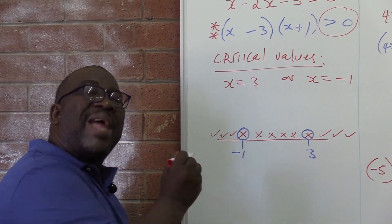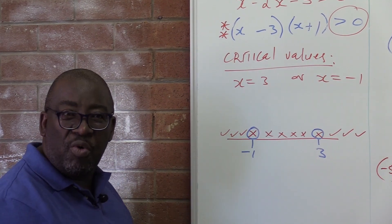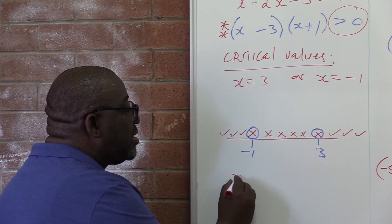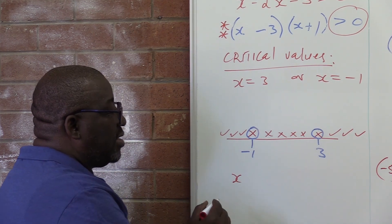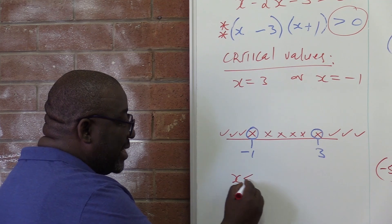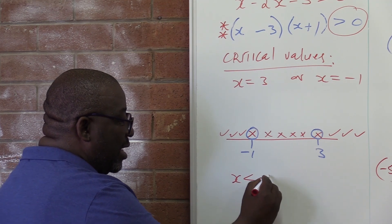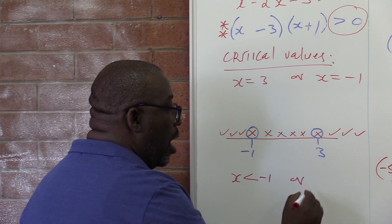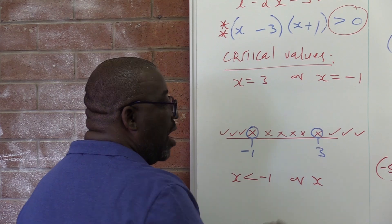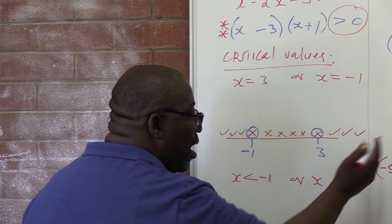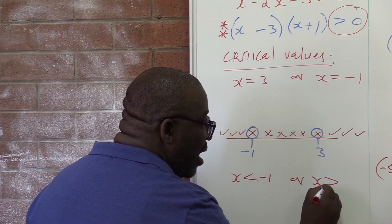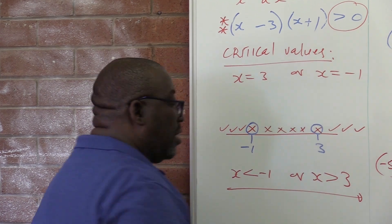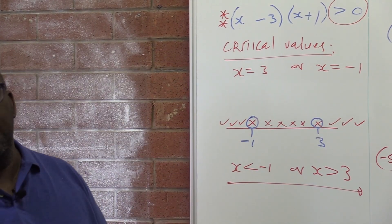Let's write this solution. You write what you see. My x in this particular case are all the values that are less than minus one — this represents this part. Or our solution are all the values that are bigger than three. This is how you go about writing inequalities.